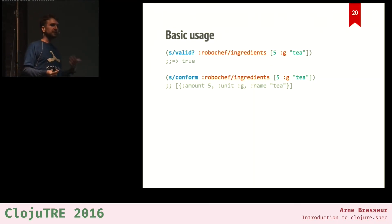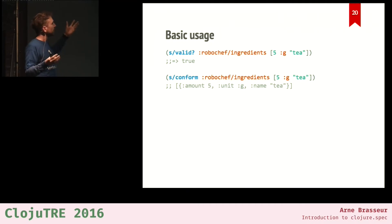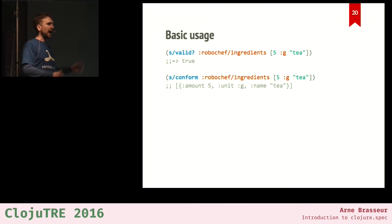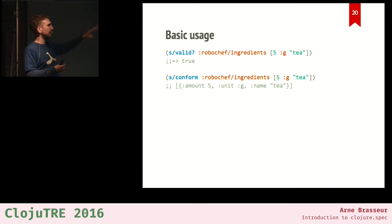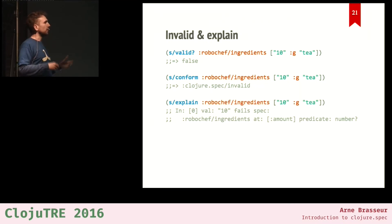What can you do with those specs? You can validate data — checking whether a list of ingredients corresponds to what you wanted. There's also the conform operation, which takes a value and runs it through the spec. It either gives you the same data or the same data in a slightly different shape. So what was a flat vector becomes a vector of maps with meaningful keys based on the spec — much richer and easier to consume.